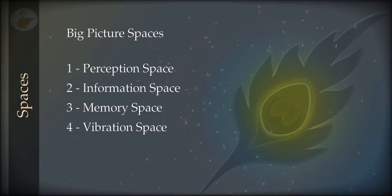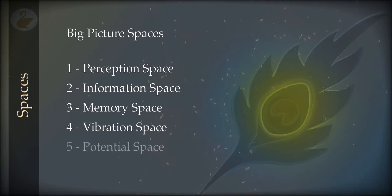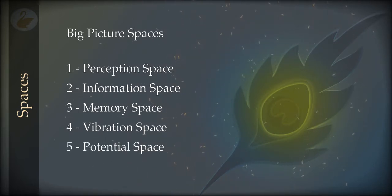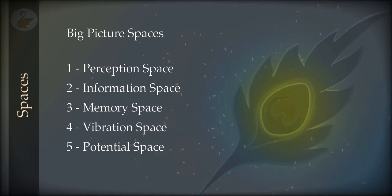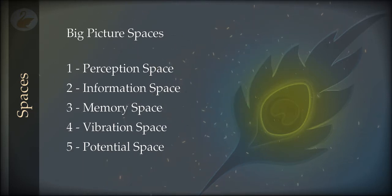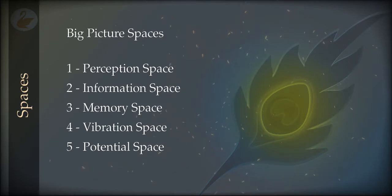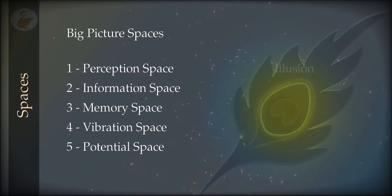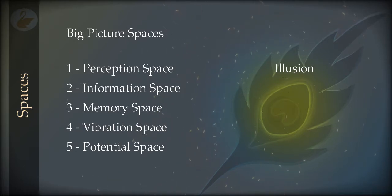The vibration space also has a substrate and that is the potential space. The vibrations do not really exist — there is only potential for them, which manifests sometimes. In the potential space there is nothing; there is only the potential of there being a vibration. Now the interesting thing is that the perception space is an illusion. The information space is being presented as an illusion in the form of irreducibles.